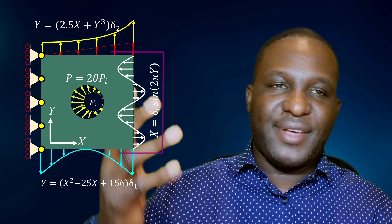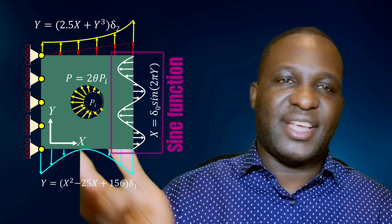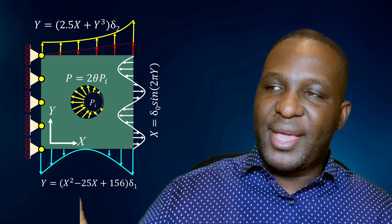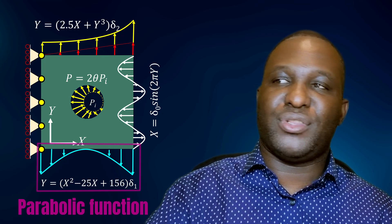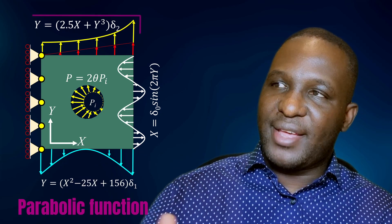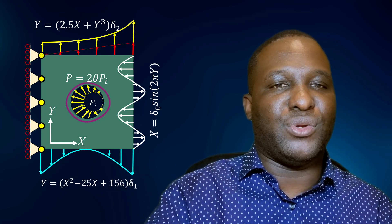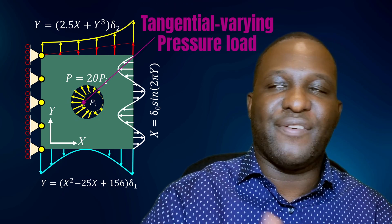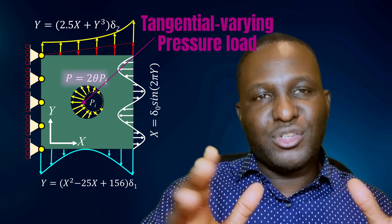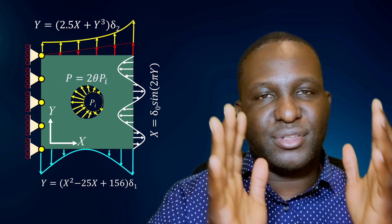This is a sort of loading that you may want to apply with an Abaqus model. On the front you have a sine function varying sinusoidally. On the base there's a parabolic function. On the top there's a trinomial function with a linear varying load, and right in the center there's an internal pressure load where you're applying a tangentially varying pressure load defined by a specific equation. I'm going to show you how you can do this in Abaqus, so let's get started with this video.